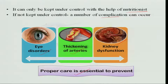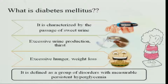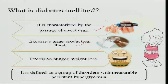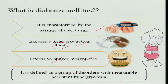Proper care is essential for prevention of diabetes. Diabetes is characterized by passage of sweet urine — a lot of glucose is passed through urine — and excessive urine production, which causes the person to feel a lot of thirst. There is also excessive hunger and weight loss. It is defined as a group of disorders along with a persistent hyperglycemia or high level of blood sugar in the body.